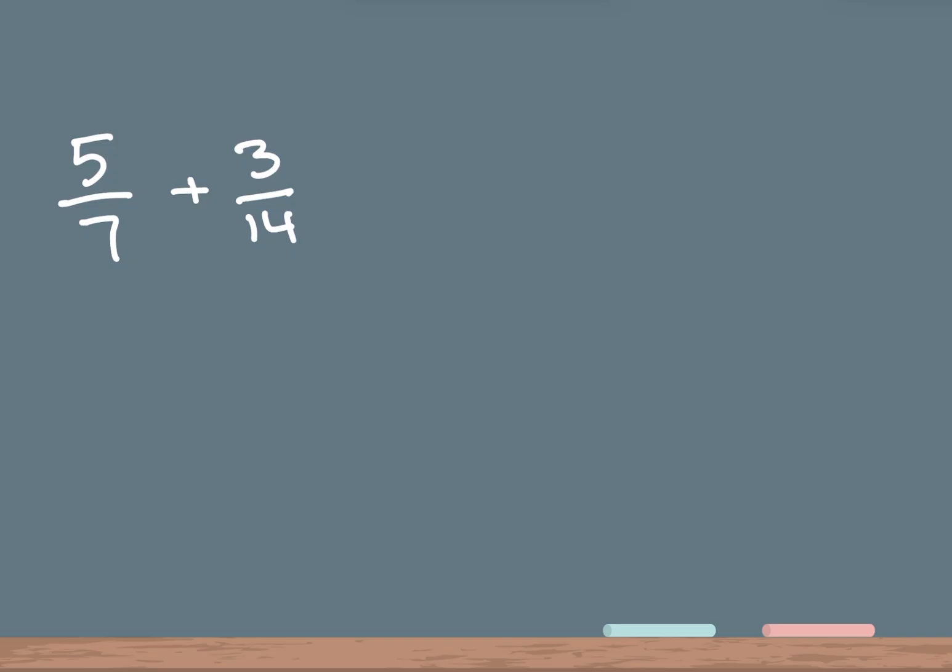Our first problem on the board is 5 over 7 plus 3 over 14. In a fraction, the top number is called the numerator and the bottom number is called the denominator.